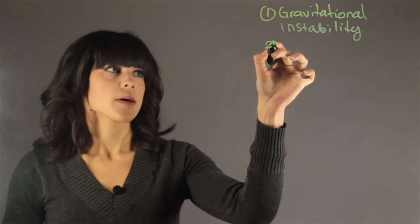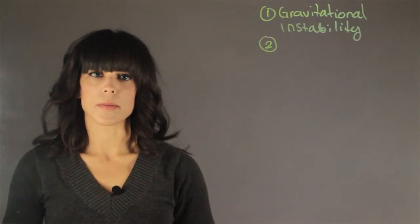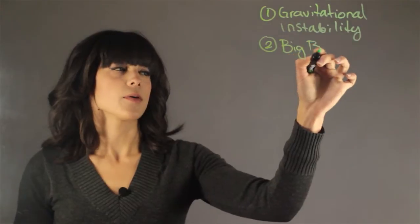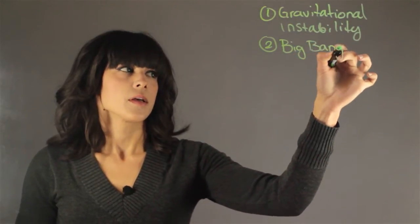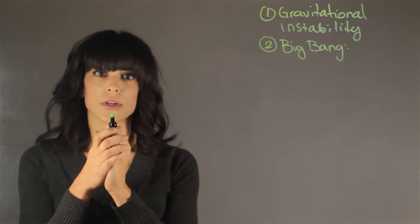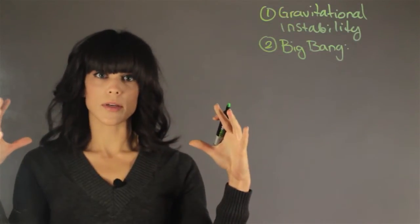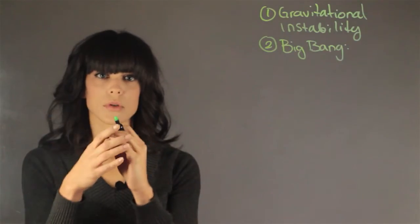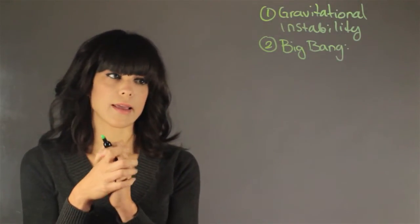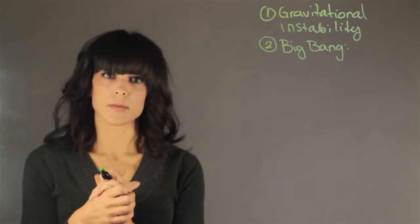The second one that I want to talk about is the one that most people know, the Big Bang. This is how everything was formed. The Big Bang is that everything was at the center. Everything that we know, space and time, was collapsed into a tiny space and it has been expanding since the beginning of time.